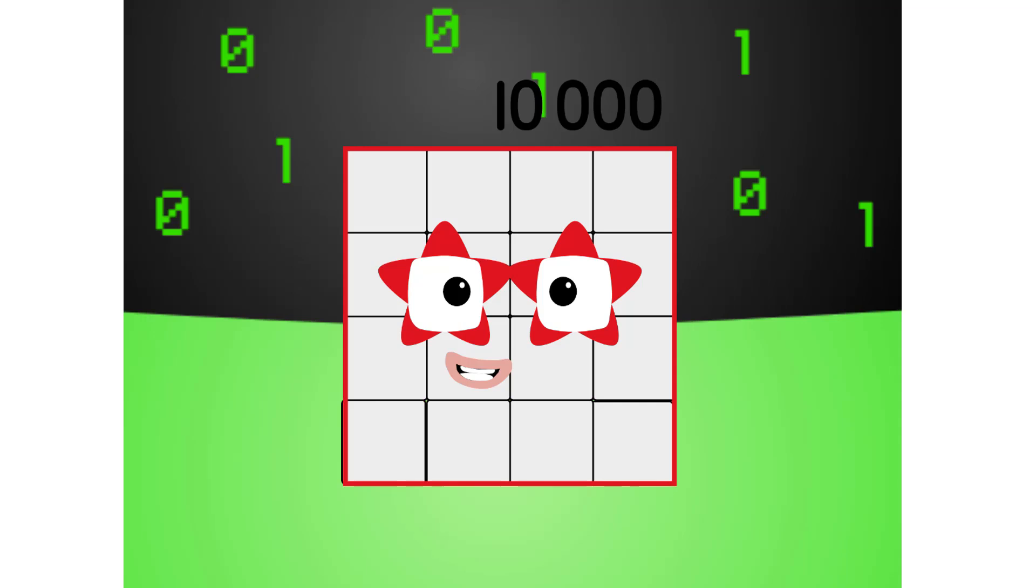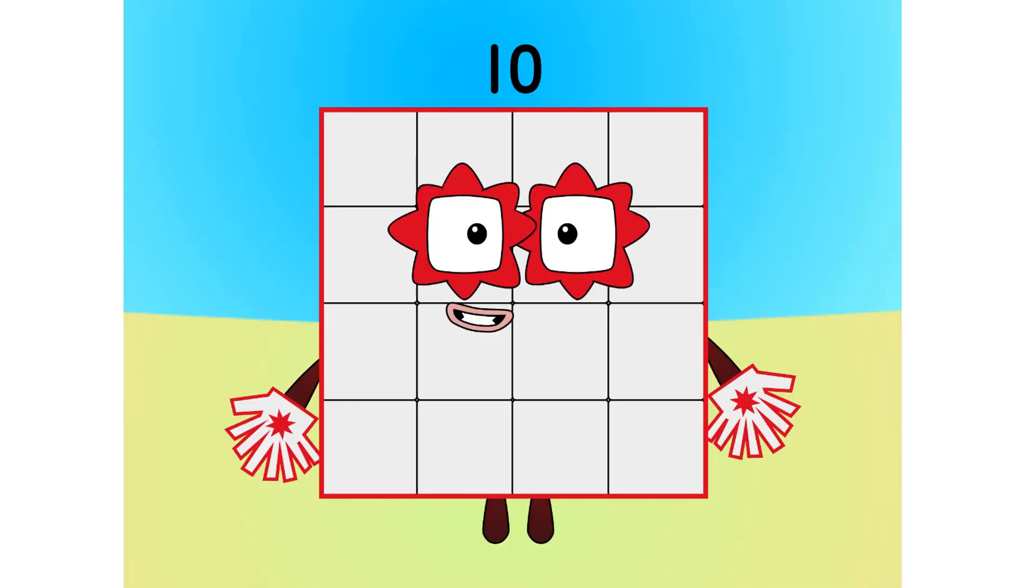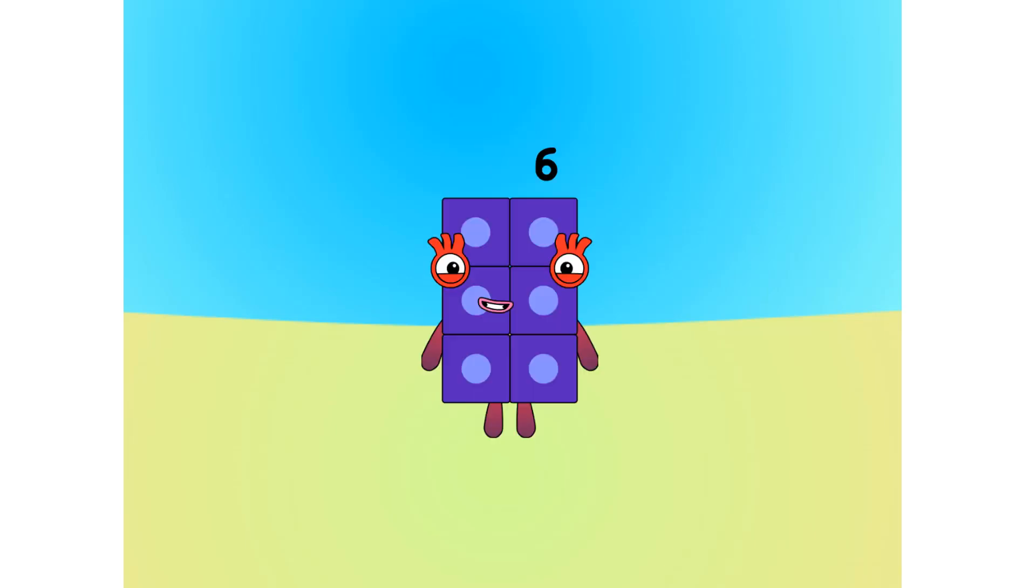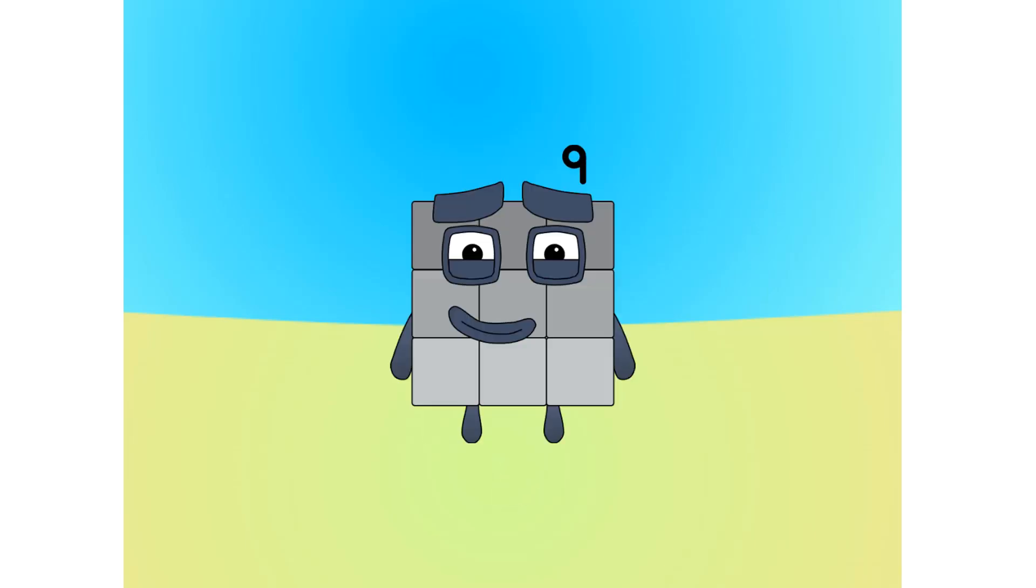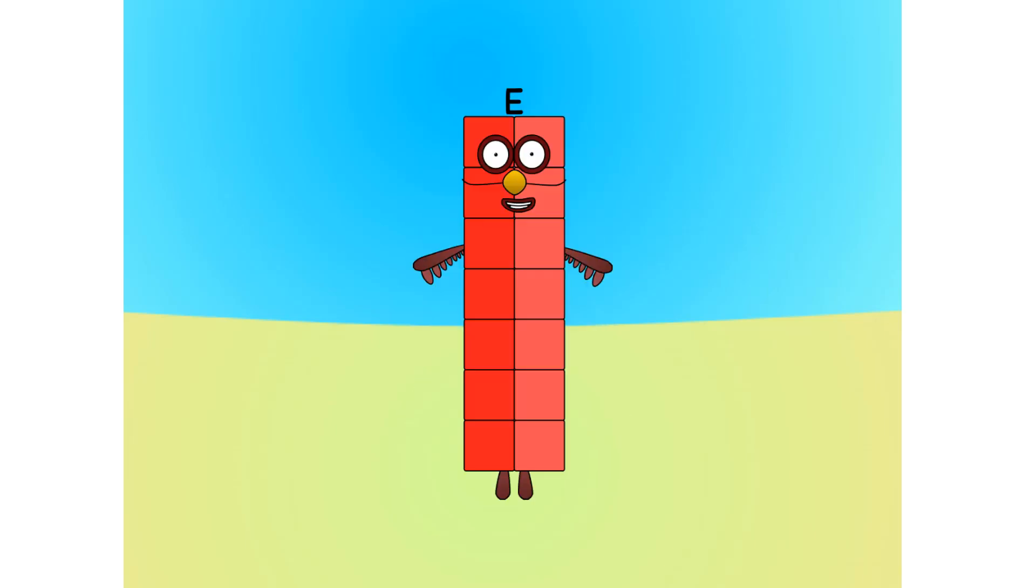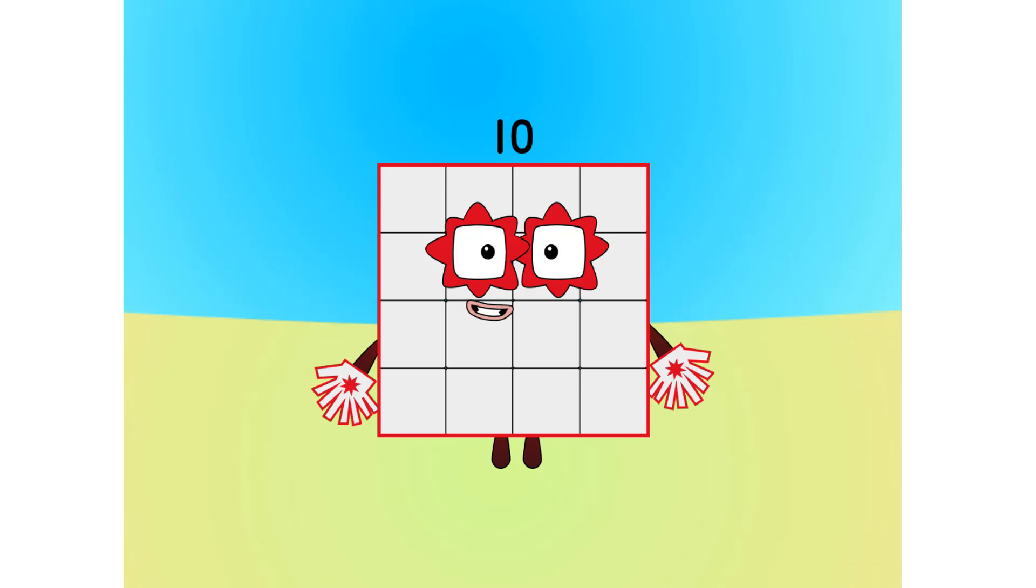Let's move on to the next base. This is base sixteen. Also known as hexadecimal, or hex. If this is base sixteen, there needs to be sixteen digits. One, two, three, four, five, six, seven, eight, nine, A, B, C, D, E, F, one zero.